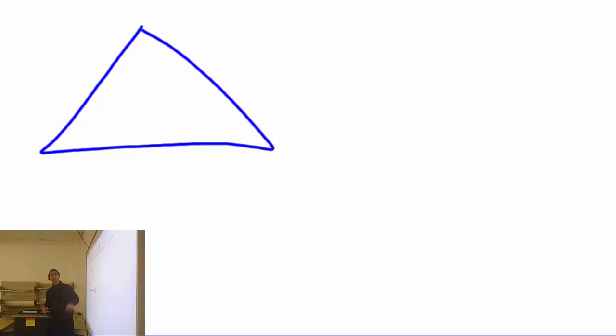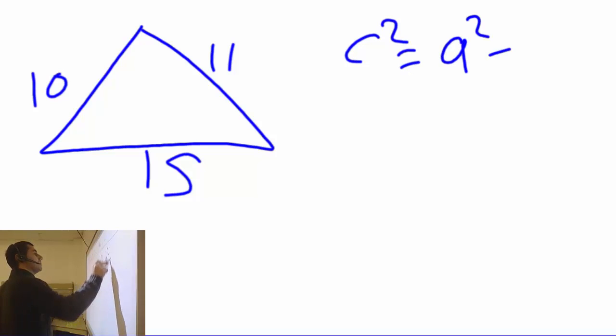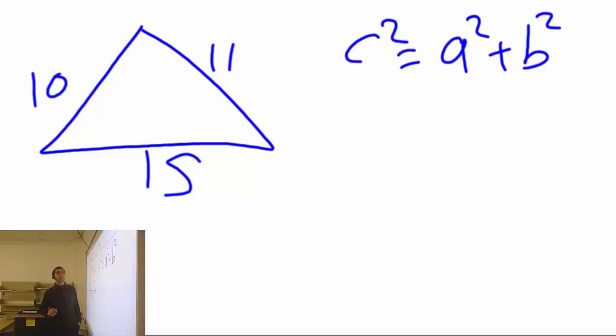And with your homework, your first question something like this: they don't tell you you have a right triangle or not. They tell you this is 10, this is 11, this is 15. Is this a right triangle? Maybe if this is a right triangle, I must have that. I must be able to see this.